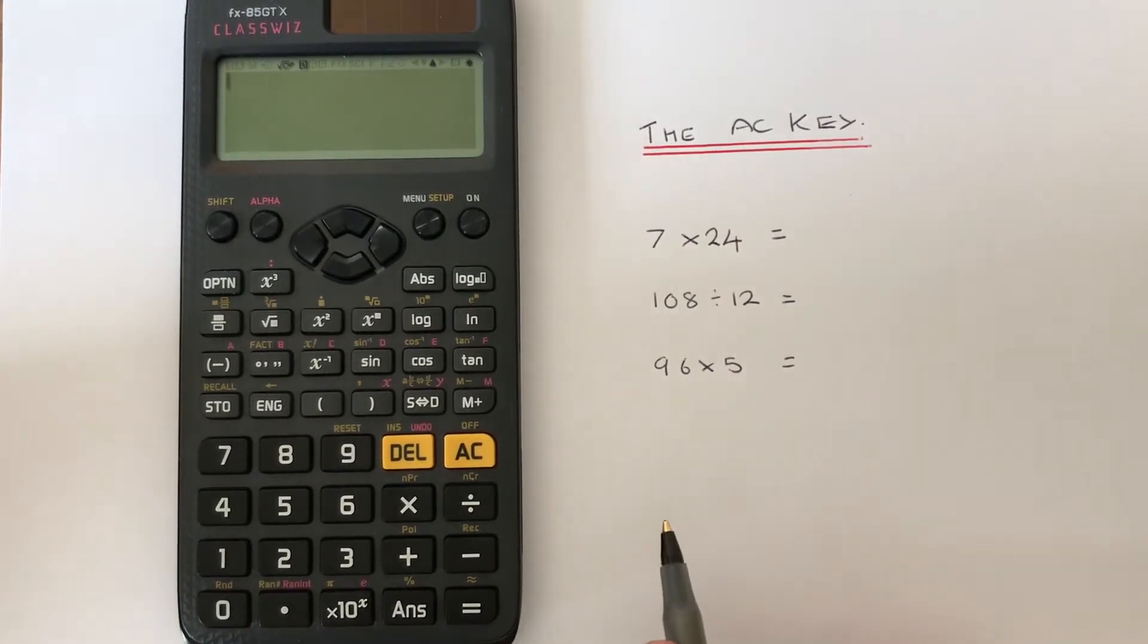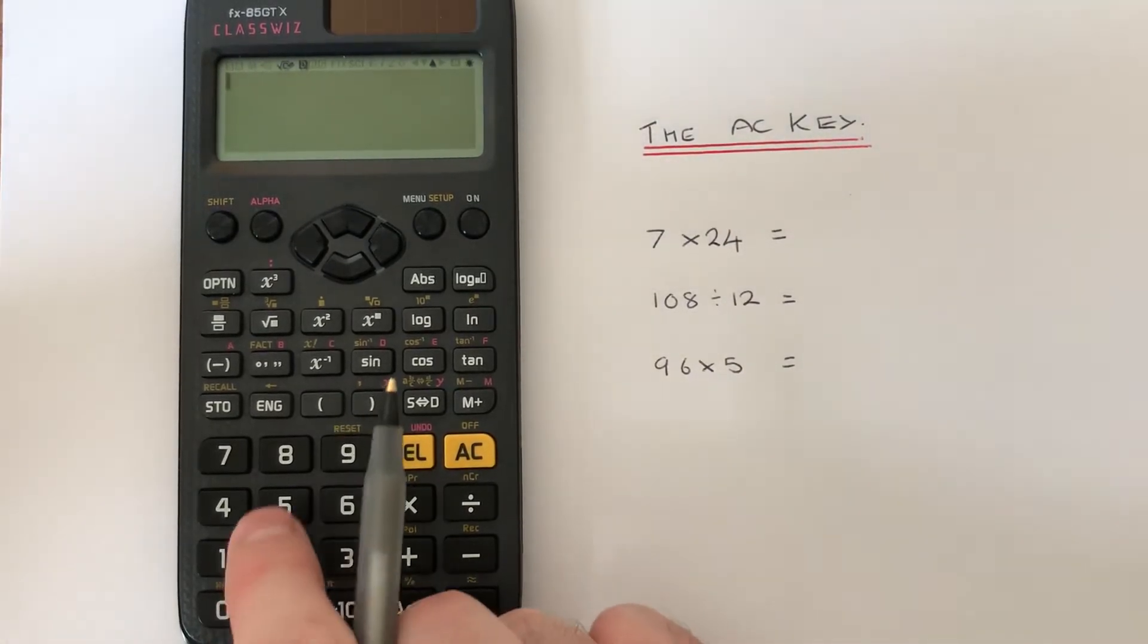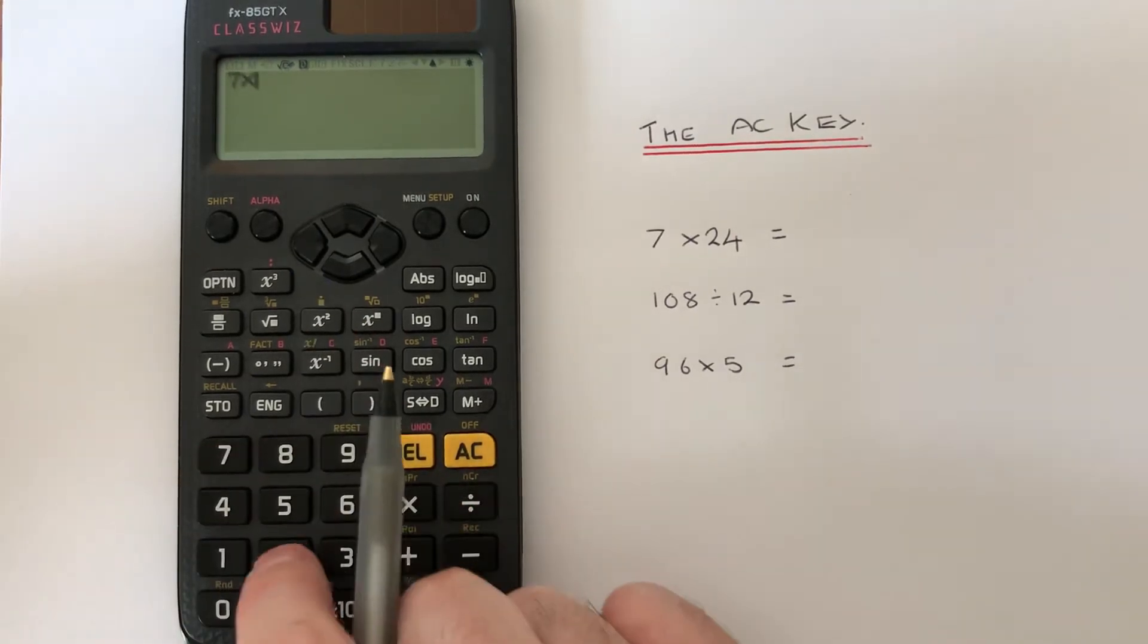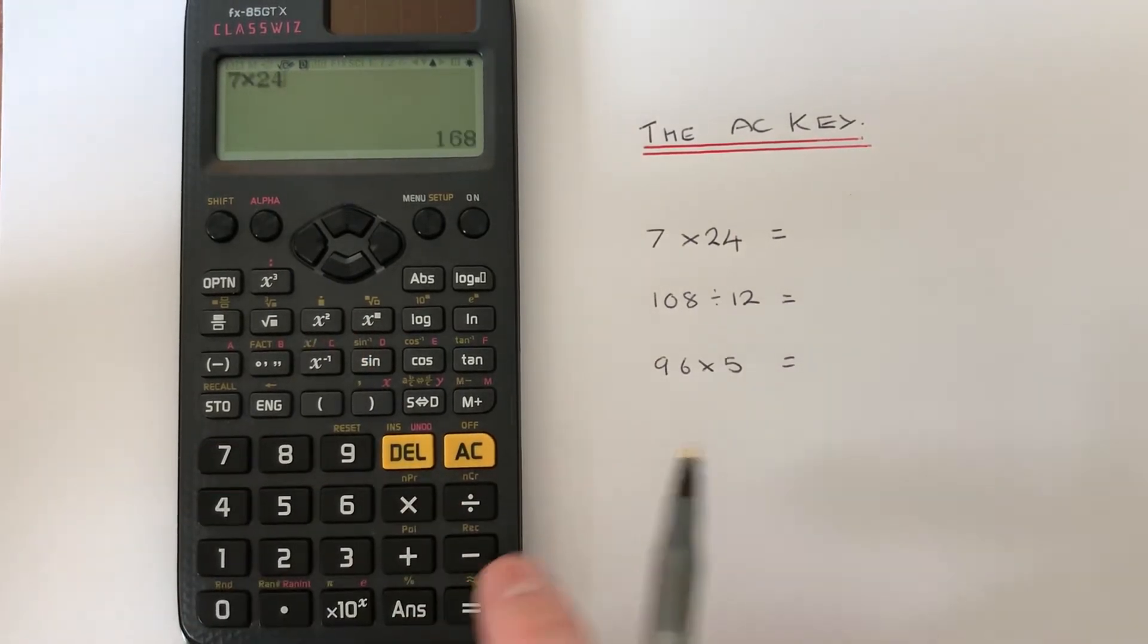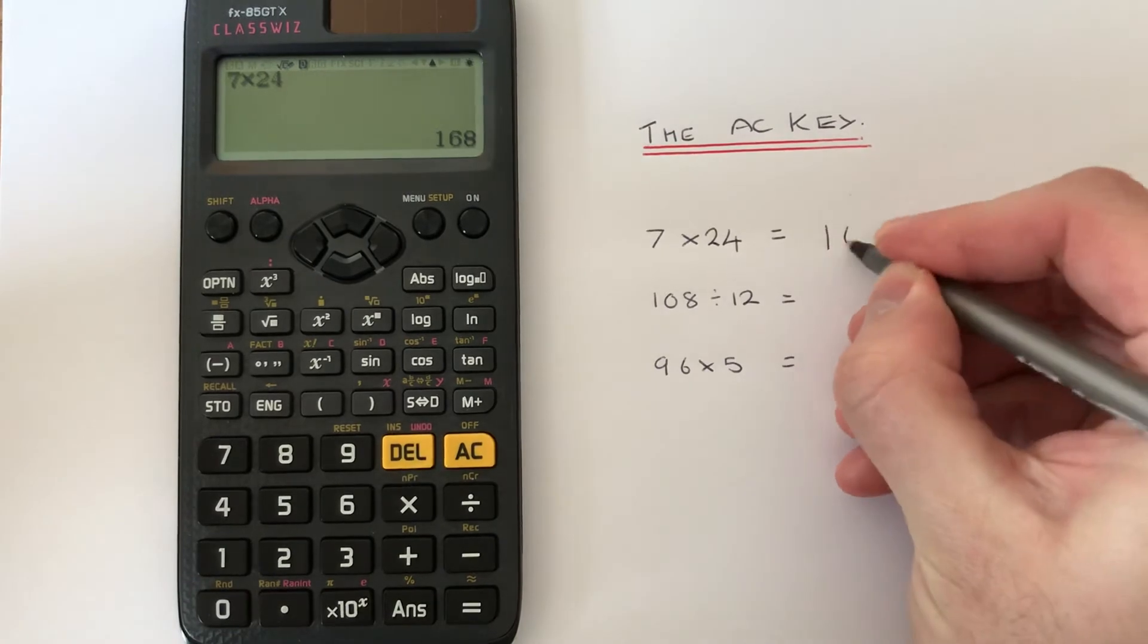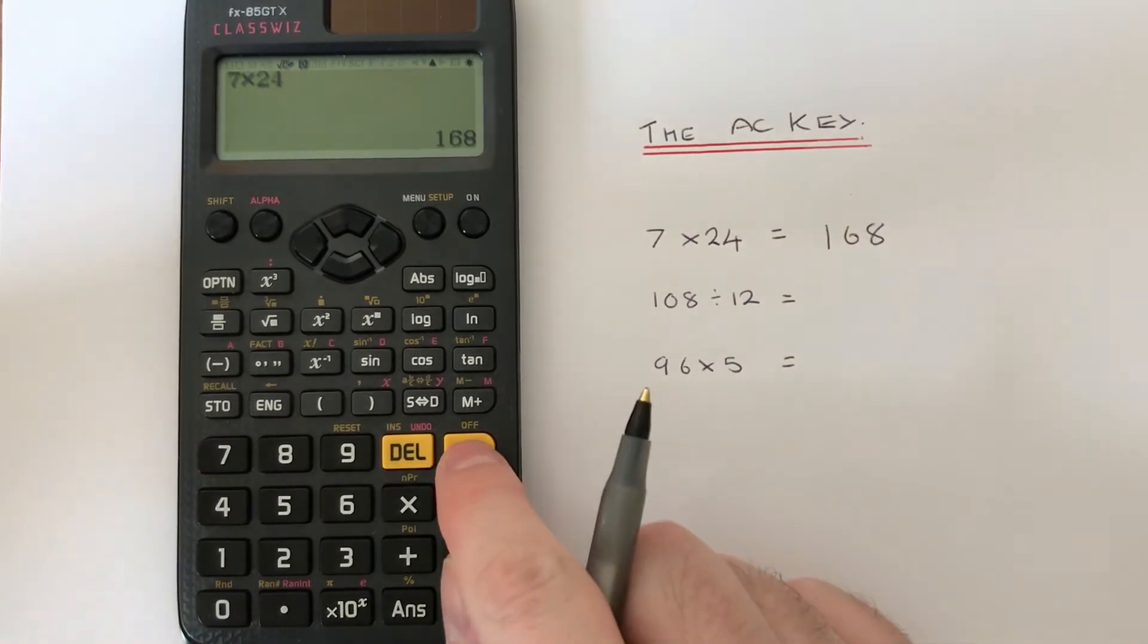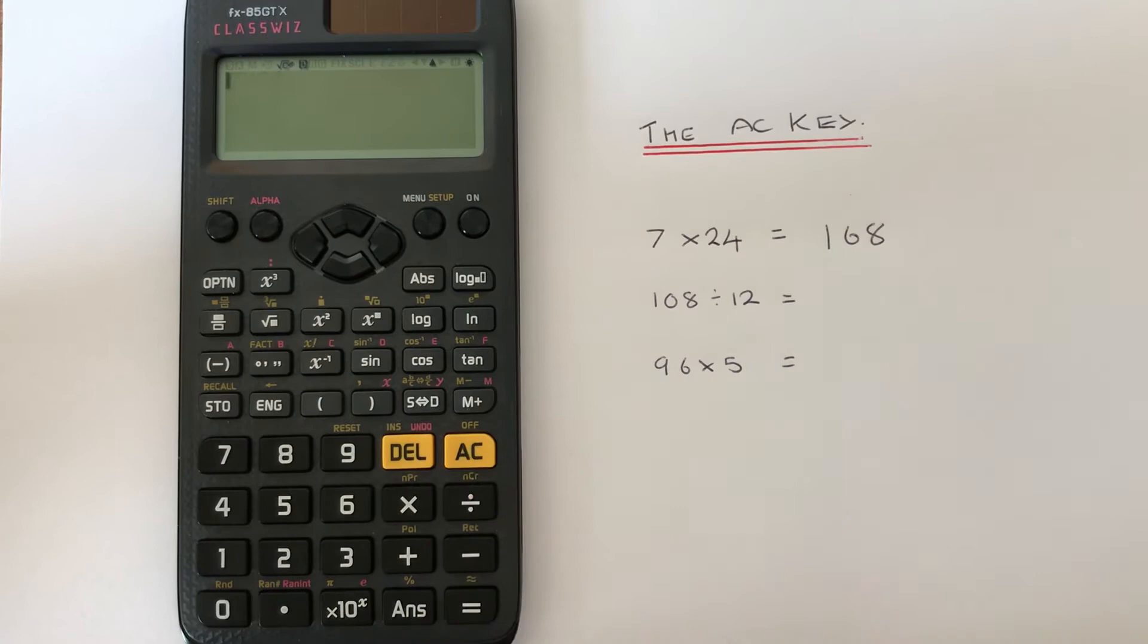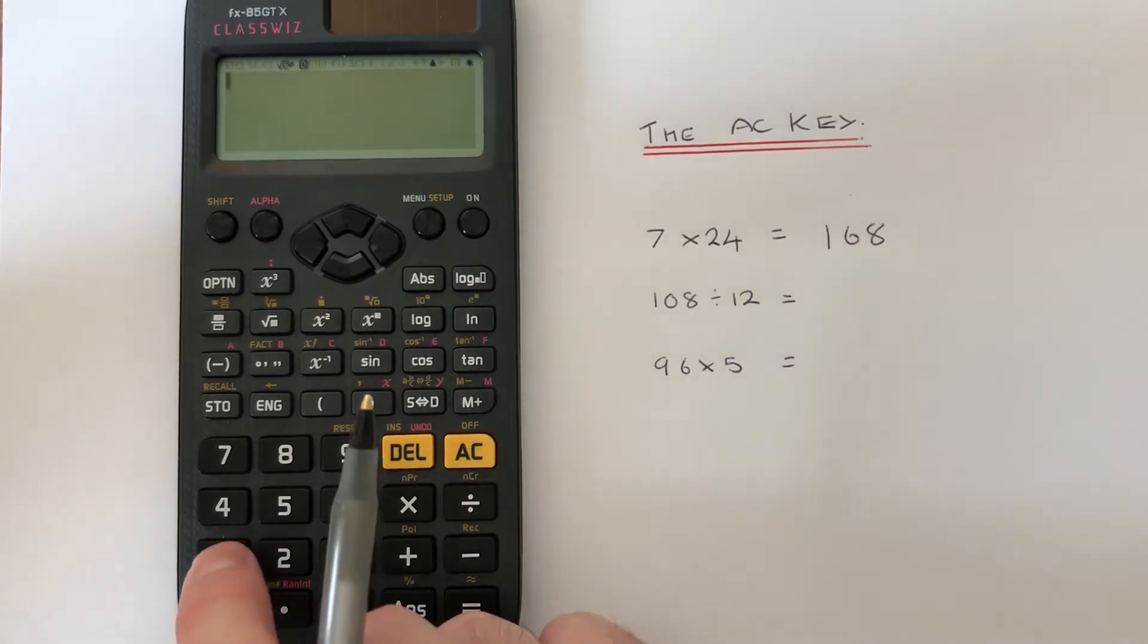Let's work out these three calculations here. The first one is 7 times 24, which is equal to 168. If you press the AC key, we can do our next calculation.